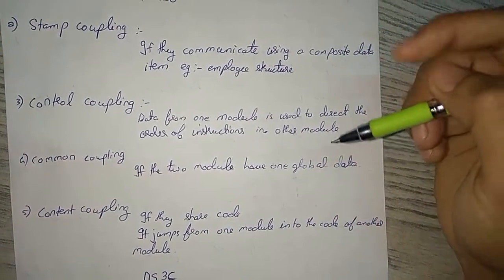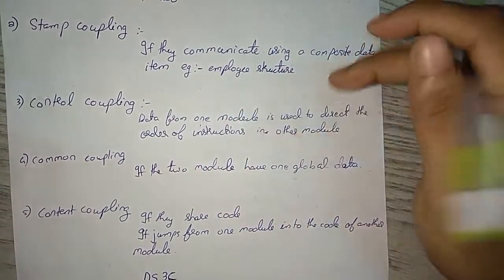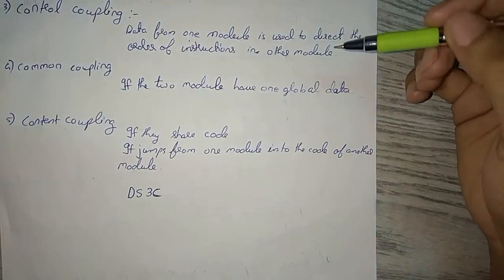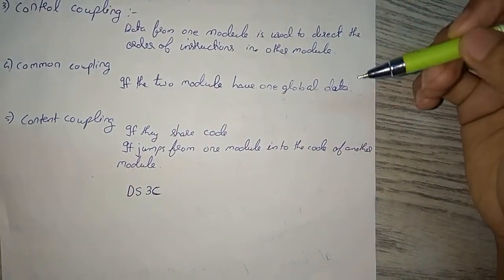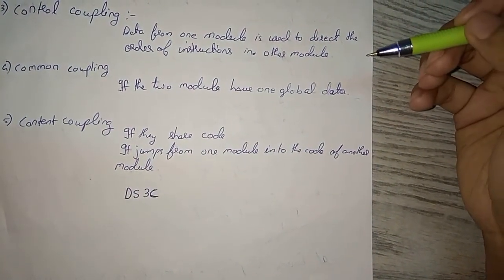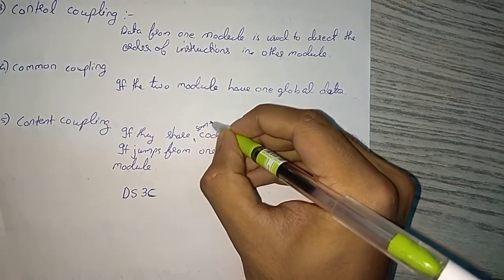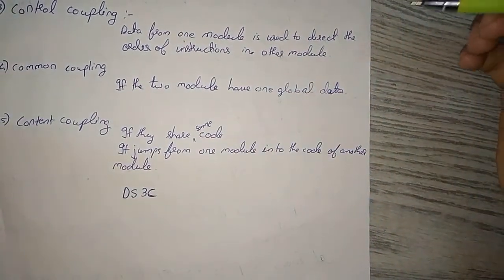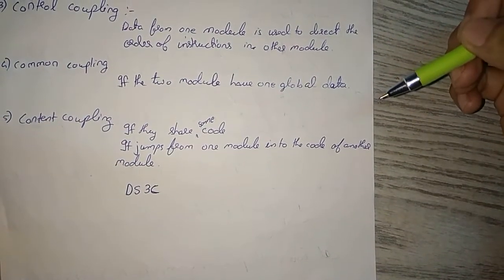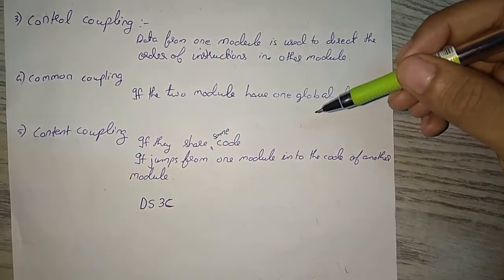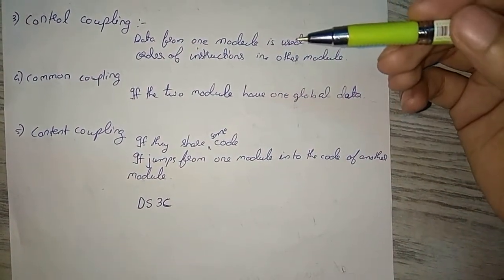In common coupling, we have a global letter. That means two modules are using one global letter. Then we call it common coupling. Content coupling means if they share the same code—it jumps from one module into the code of another module. This is called content coupling.